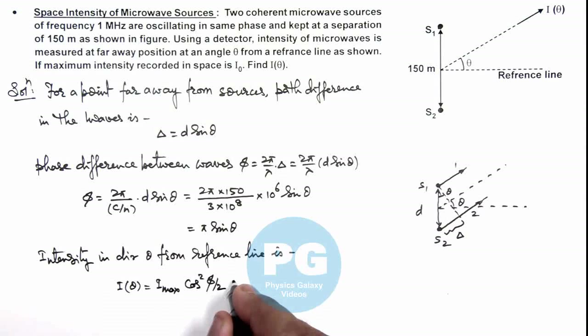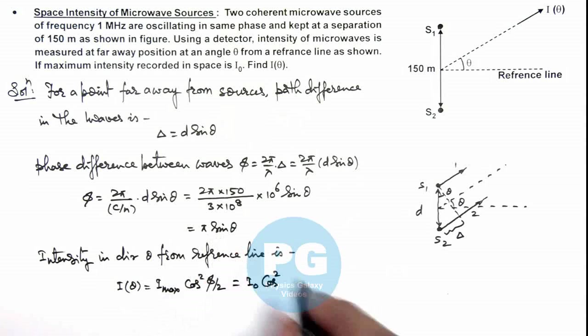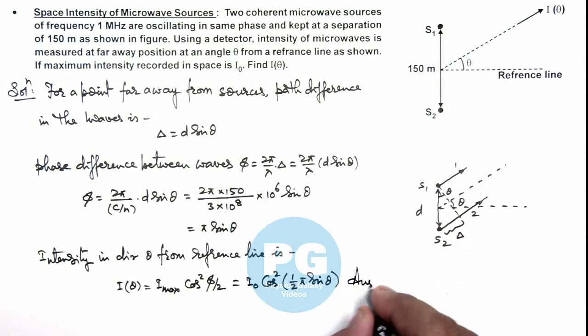So here I_max is given as I₀, so this is I₀ cos²(φ/2). φ is π sin theta, so this will be (π/2) sin theta. So this is the intensity as a function of theta which is the result of this problem.